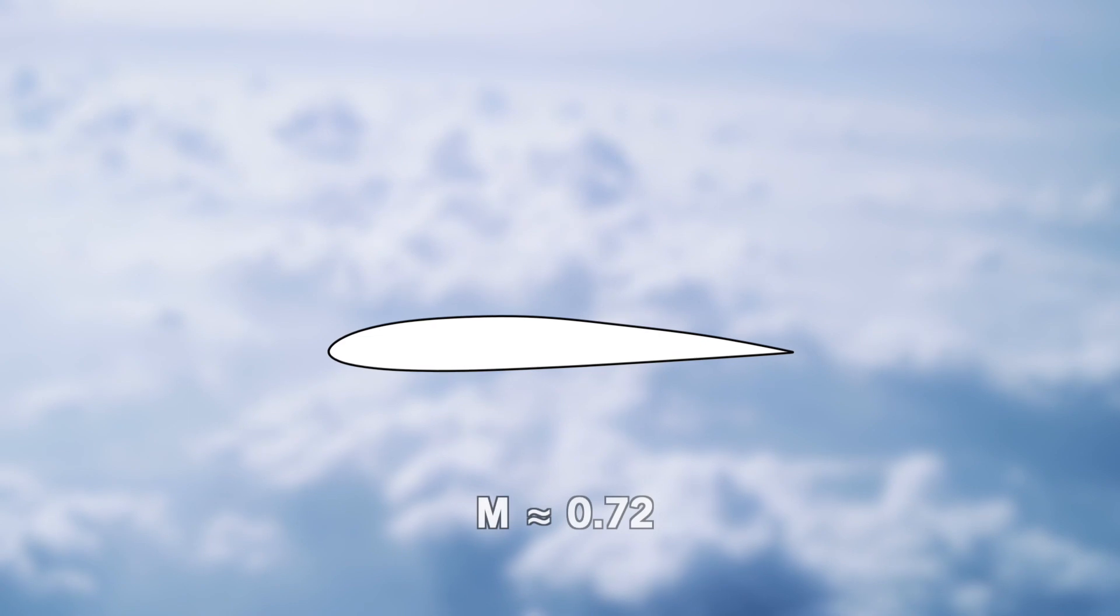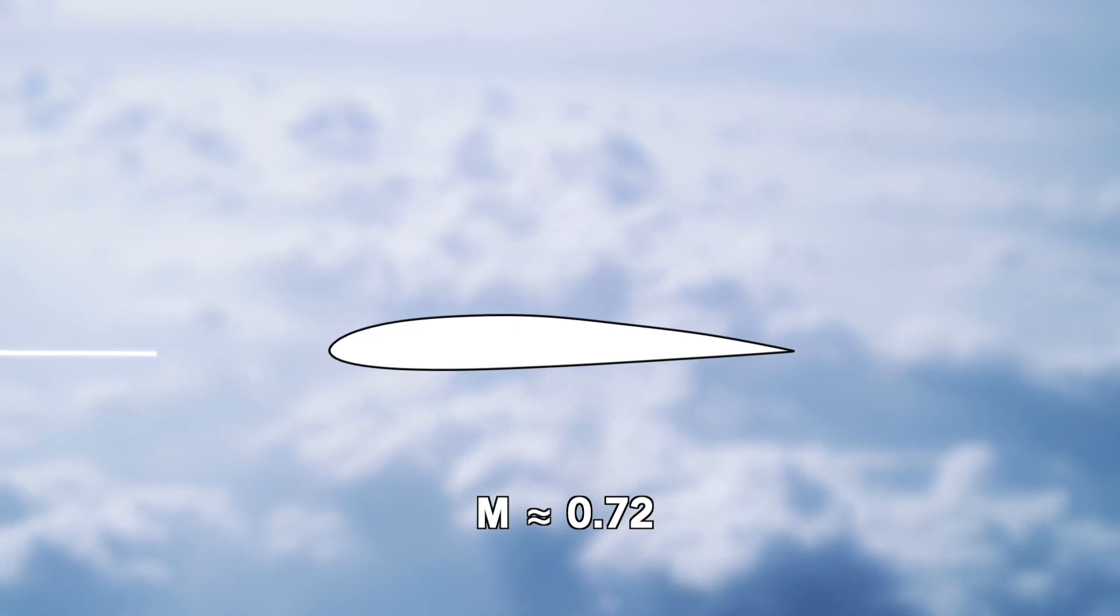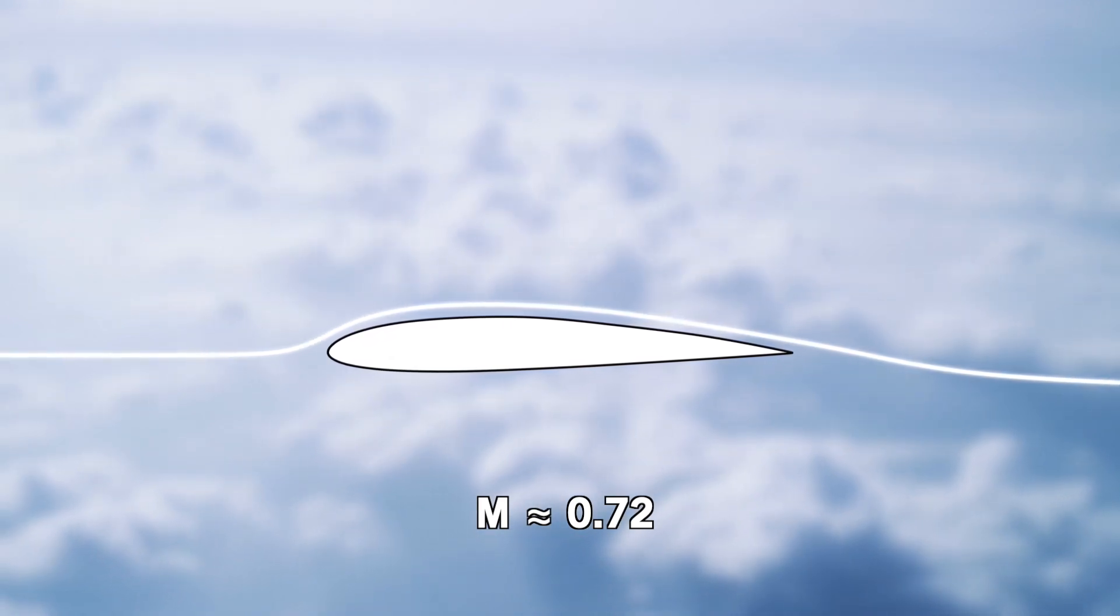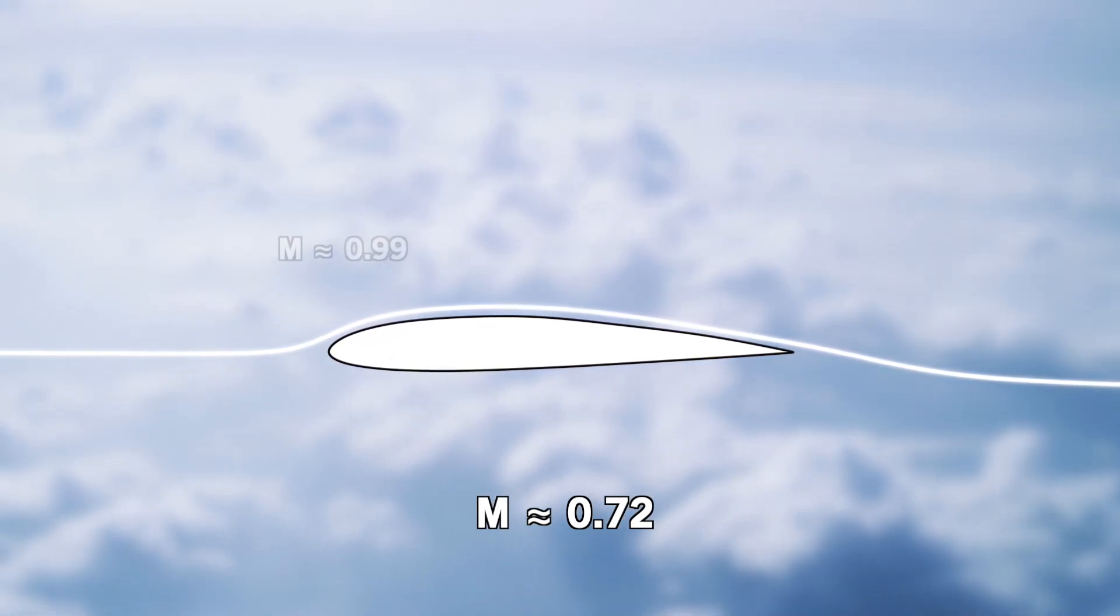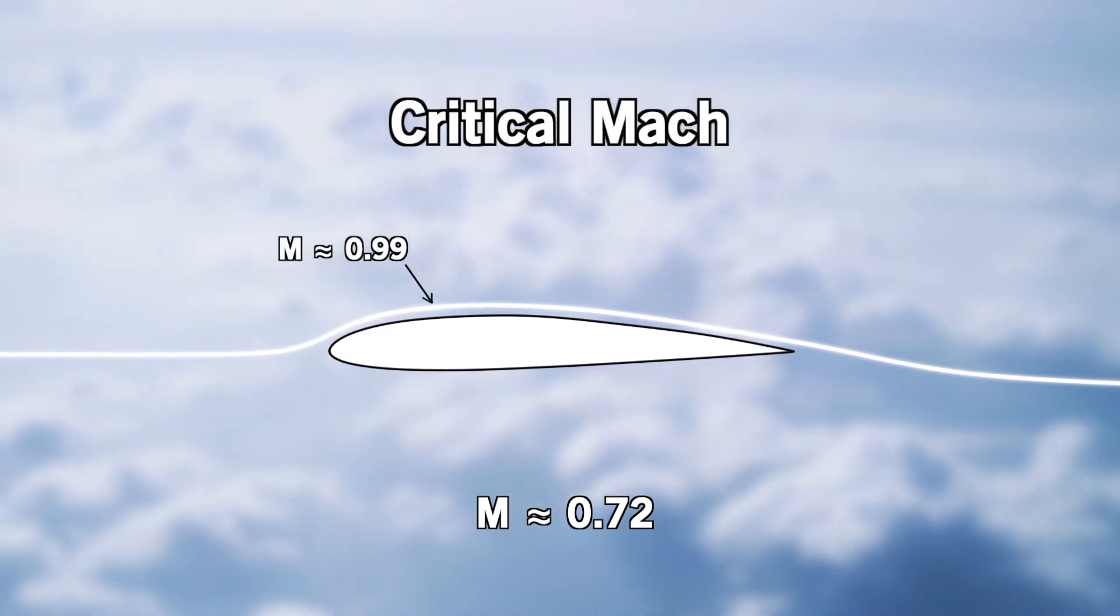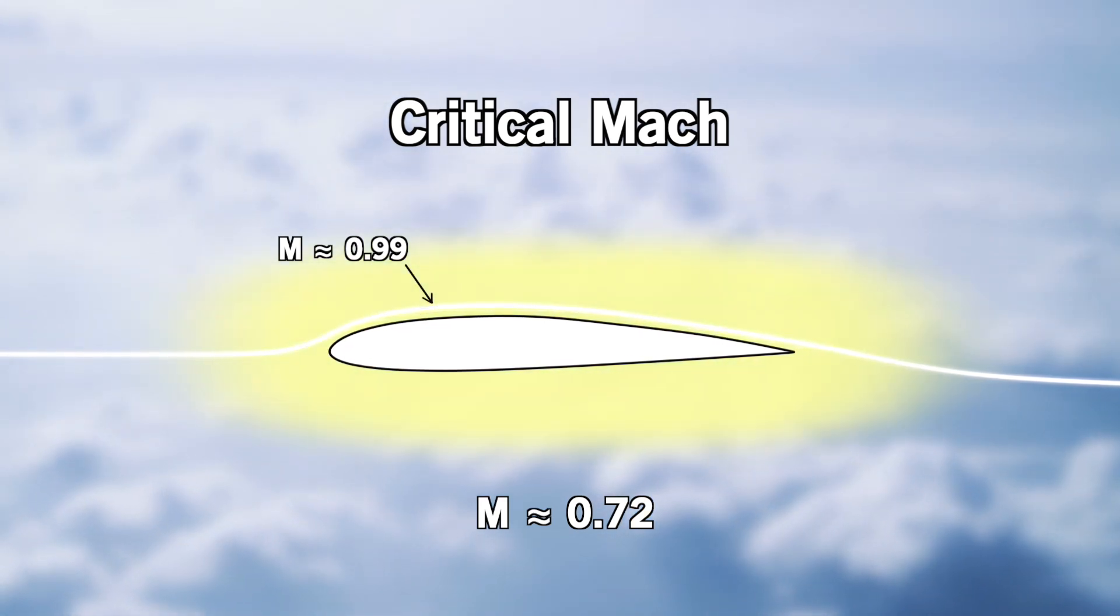At a speed of around Mach 0.72, that is at 72% of the speed of sound, the airflow traveling above the airfoil accelerates to almost sonic speeds, but without reaching Mach 1. This is the so-called critical Mach number, where the airflow always remains at subsonic speeds.